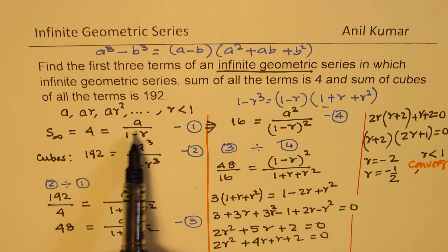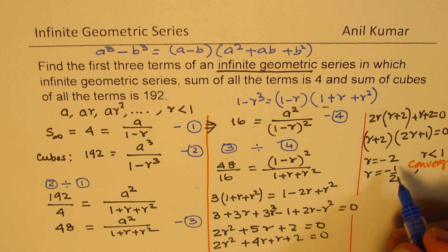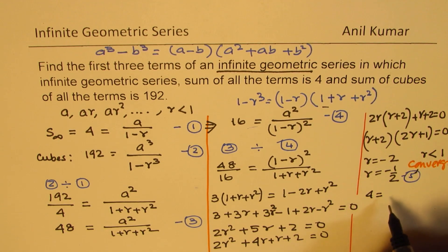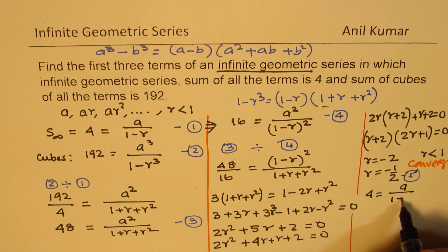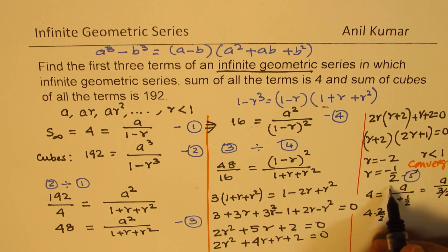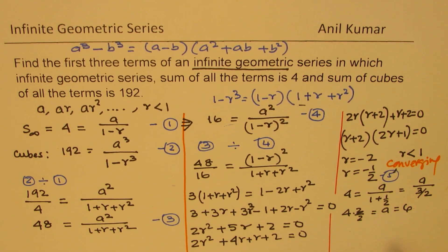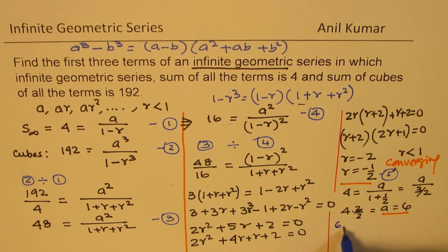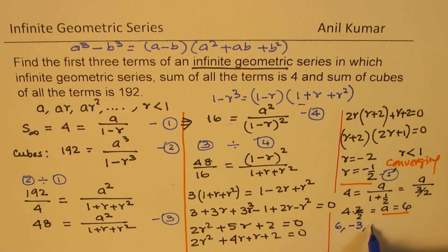Putting R as minus half in our equation, we get 4 equals to A over 1 minus minus half makes it plus half. So that is 3 over 2. A over 3 over 2. So 4 times 2 over 3 equals to A, which is 6. So A equals to 6, and now we know what A and R is. So R is minus half. We can write down the series. Series will be 6, and then times minus half means minus 3. Then again times minus half will give us 3 by 2. These will be the first 3 terms of our series.